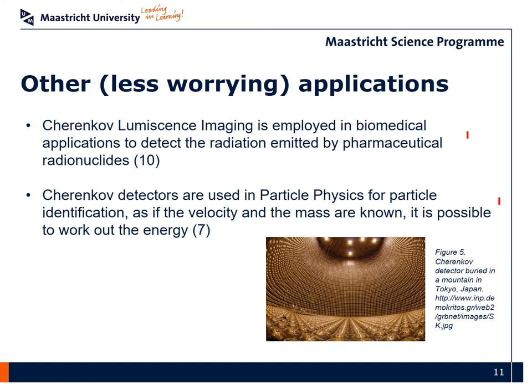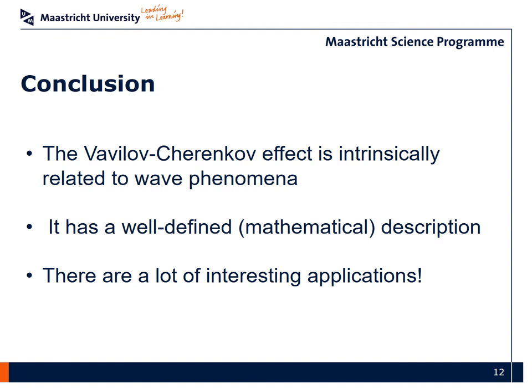Lastly, in particle physics, the Cherenkov radiation is being used to identify particles by Cherenkov detectors because the velocity of particles can be measured by analyzing the Cherenkov radiation they emit. If the momentum of the particle is known independently, it's possible to work out the mass, therefore the energy of the particle, which can be identified.